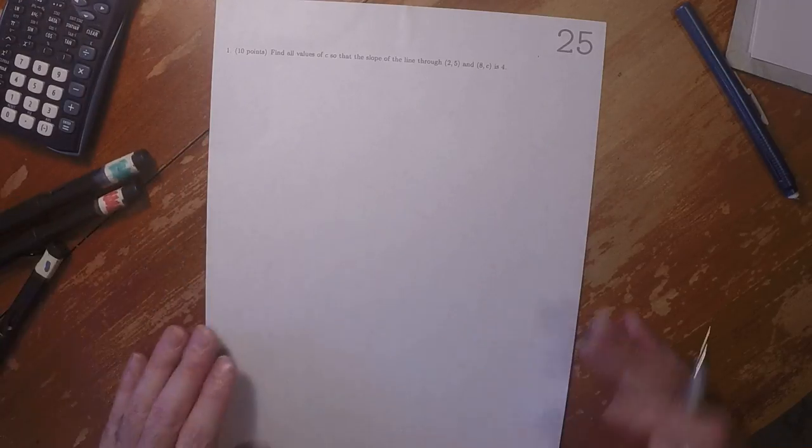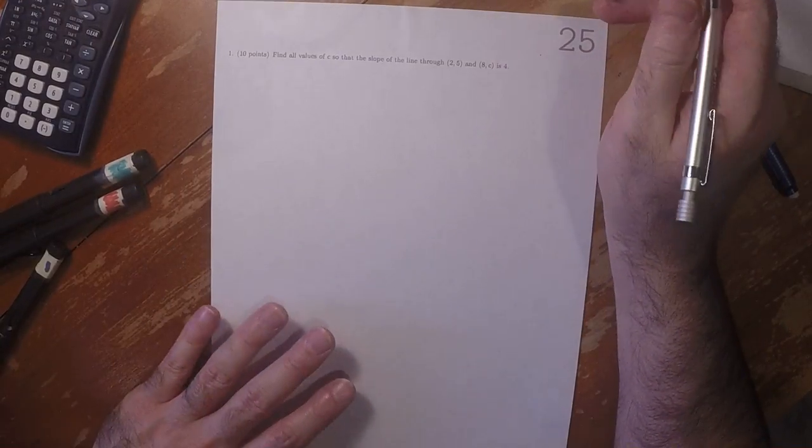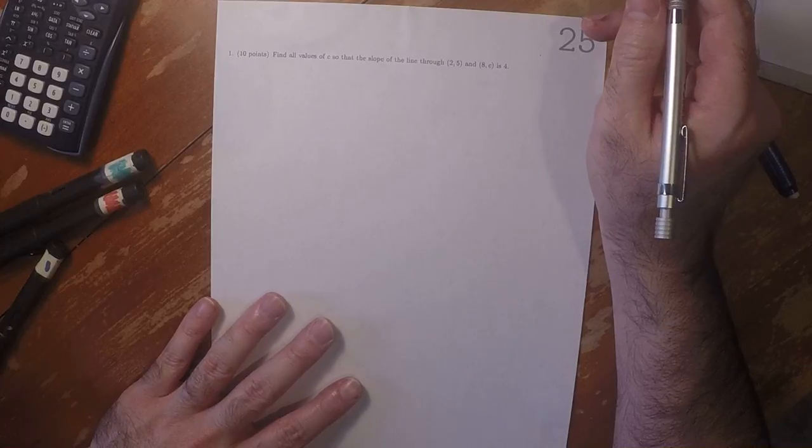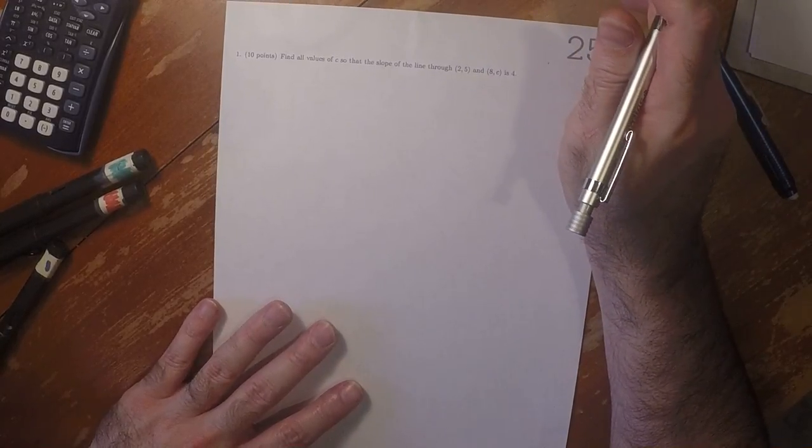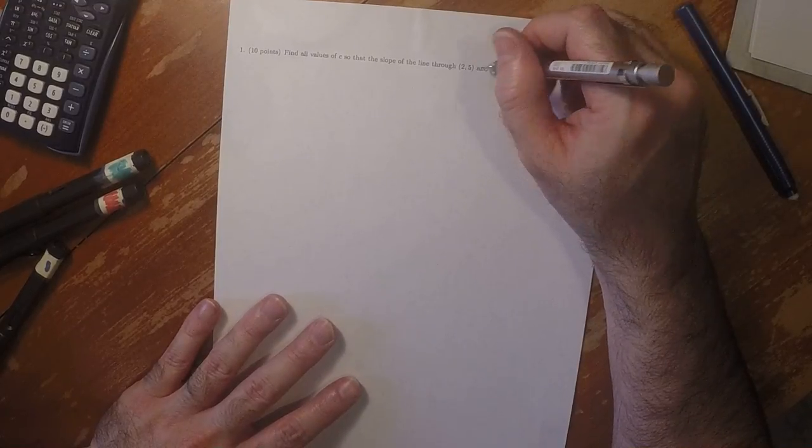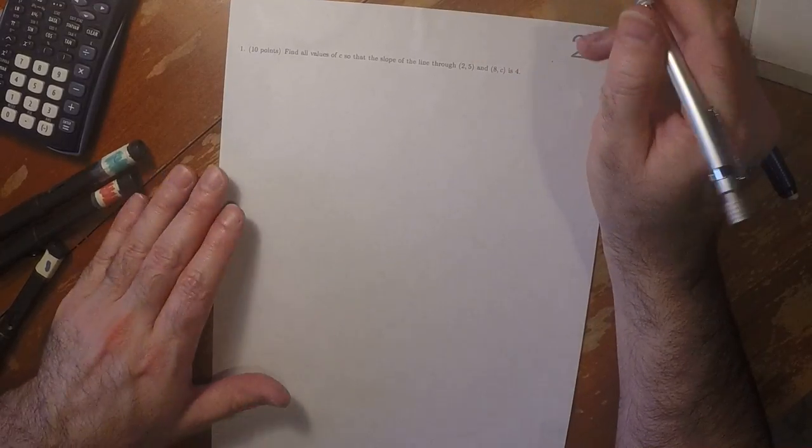This is the answer to written homework 25. Find all values of c so that the slope of the line through (2,5) and (8,c) is 4.